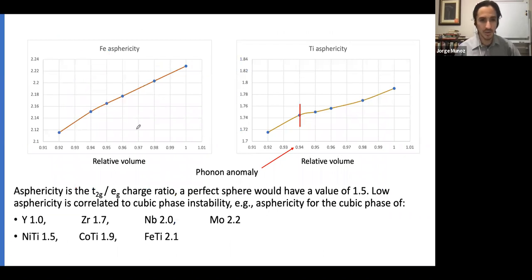Asphericity is the ratio of the charge in the T2G orbitals and the EG orbitals. This is correlated to the stability of the cubic structure in different materials. For example, yttrium is not stable in the cubic structure and goes to hexagonal phases. Zirconium is stable in hexagonal phase at low temperature, but at high temperature becomes BCC. Niobium and molybdenum are always BCC.